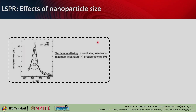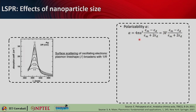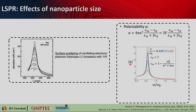Let us look into the effect of nanoparticle size on LSPR. Surface scattering of oscillating electrons changes the line shape of the plasmon resonance. The plasmon linewidth gamma broadens with 1/r. In the permittivity expression — 1 minus omega_p squared over (omega squared plus i*omega*gamma) — gamma is the damping constant. As gamma increases, the resonance becomes weaker and broader. When the nanoparticle size is smaller than the mean free path of electrons, there are additional surface scattering losses, and gamma becomes gamma_0 + A*v_F/r, where v_F is the Fermi velocity and r is the nanoparticle radius.